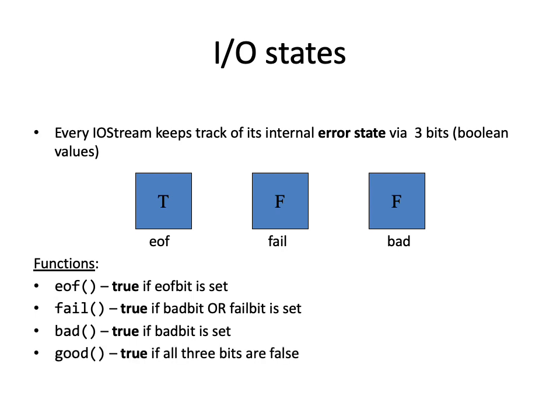There's also a good() function that returns true if all bits are false. After you try to open a file, you can call myStream.good() to ask: is it ready for me to read from or write to? There's also the clear() function: if one of the error bits gets set, you can warn the user, fix something, and then call clear() to set them all back to false, returning the stream to its good state.